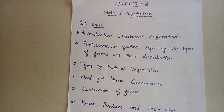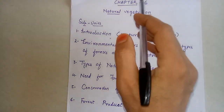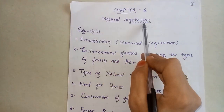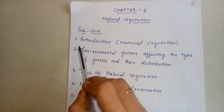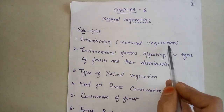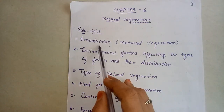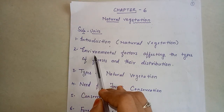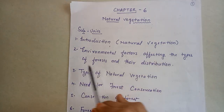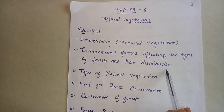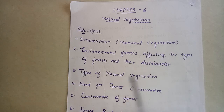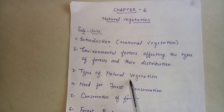Good morning children. Day before yesterday we started our chapter number 6, that is natural vegetation. On that day I explained you about natural vegetation introduction, environmental factors affecting the types of forest and their distribution, and types of natural vegetation.